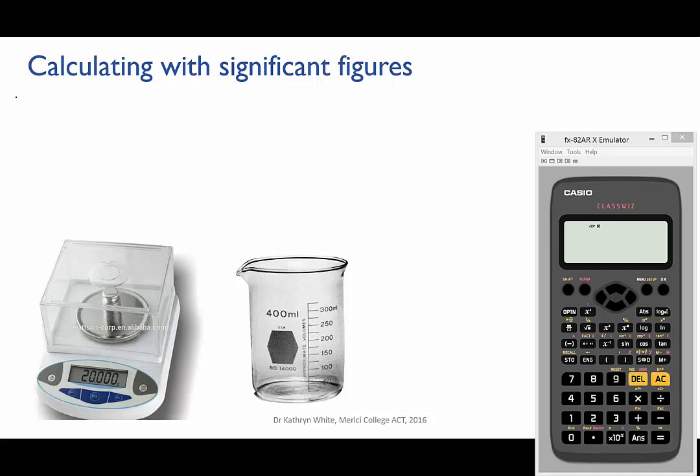You measure the mass on a really accurate balance so you have that value to five sig figs, but you measure the volume using a beaker so that measurement is one, maybe two sig figs at best. How does that affect the accuracy of your answer? How many sig figs should your answer be?